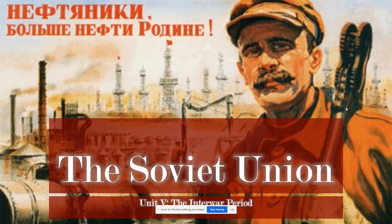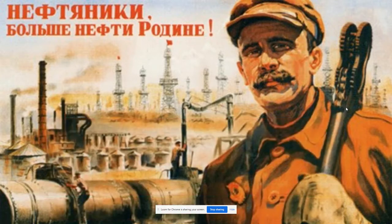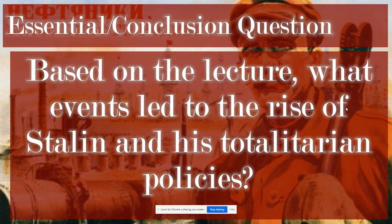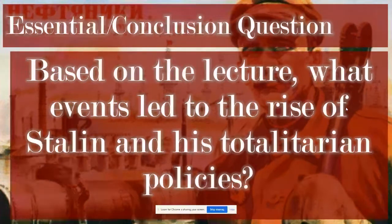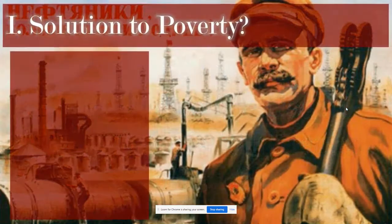Previously, we looked at the Russian Revolution and the rise of the Communist Party in Russia, and today we're going to look at the outcome and the building of what becomes known as the Soviet Union. Our goal for today is to examine the events that led to the rise of Joseph Stalin and his totalitarian policies in the Soviet Union.